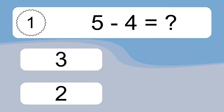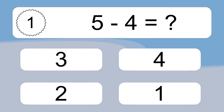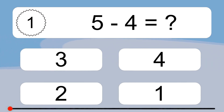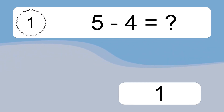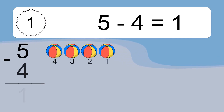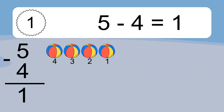5 minus 4 equals what? 5 minus 4 equals 1. Let's count it: 4, 3, 2, 1.